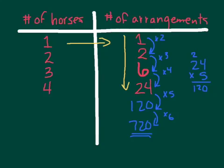That's the answer to our original problem. There are 720 possible arrangements.